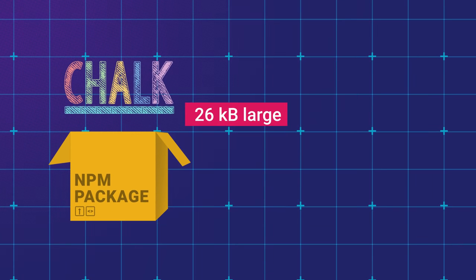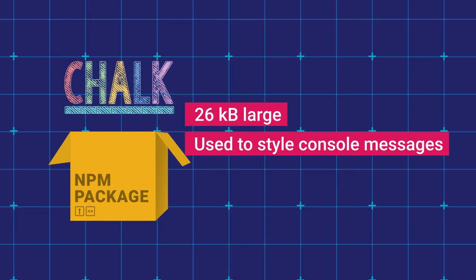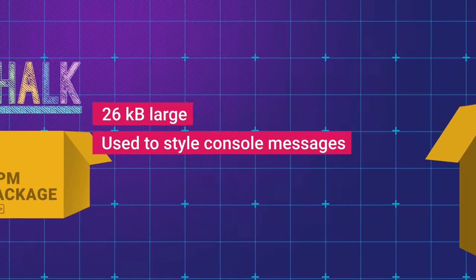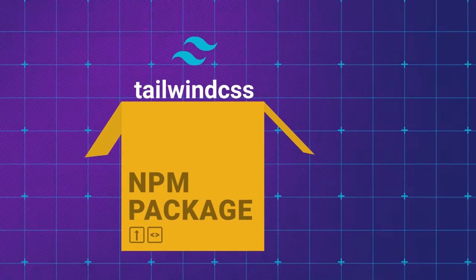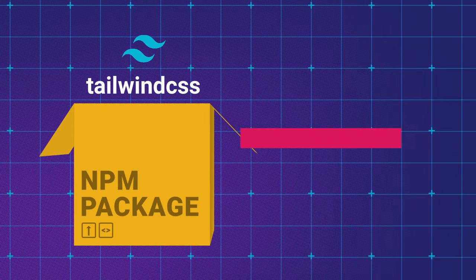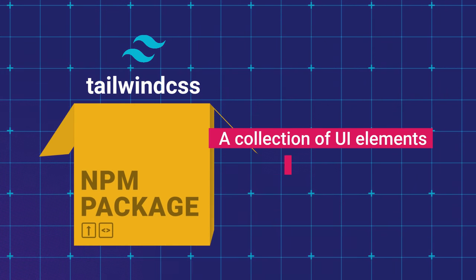For example, Chalk, a small package that weighs in at just 26 kilobytes, lets you set different colors in your console log messages. Then you have frameworks like Tailwind CSS that you can use to build websites, which is much larger at over 30 megabytes.